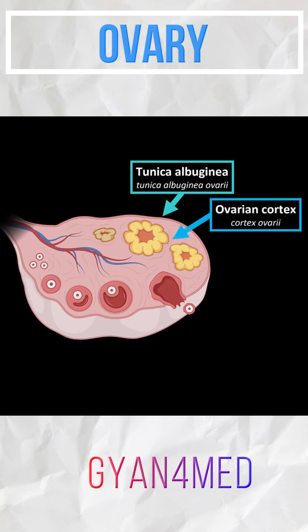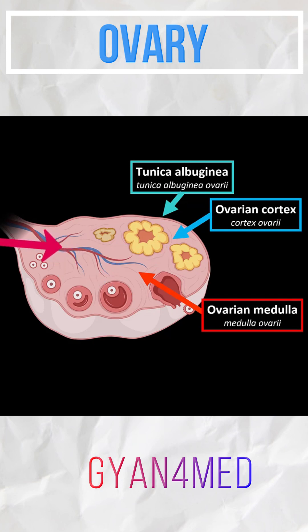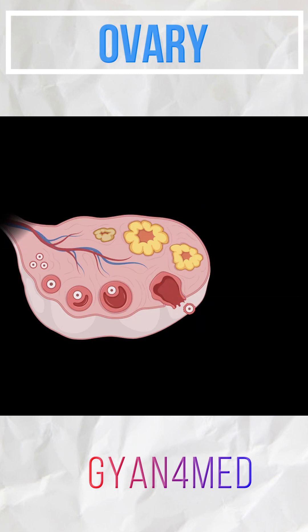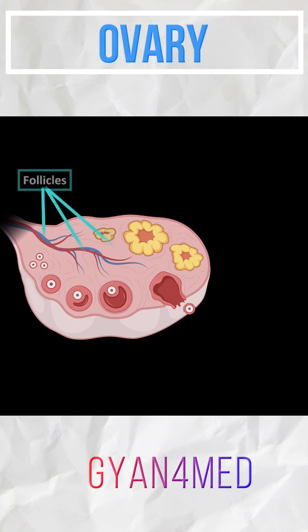The ovarian stroma forms the ovarian cortex and the ovarian medulla. The ovarian medulla is the middle part of the ovary, and it contains loose connective tissue with many blood vessels, lymph vessels, and nerve fibers. Within the cortex of the ovary, you will find follicles.